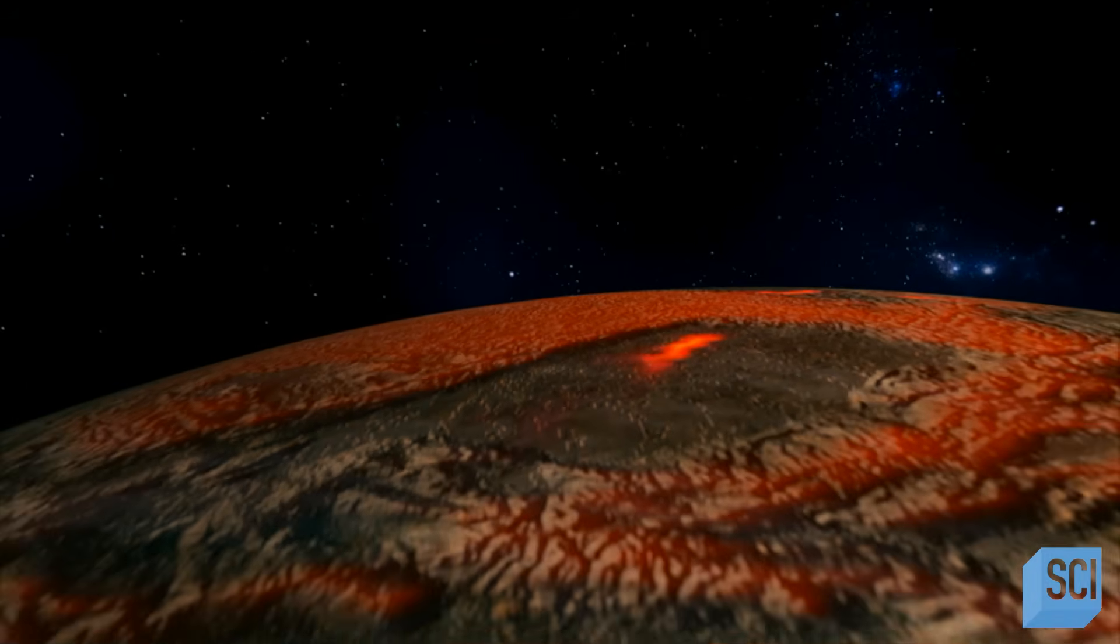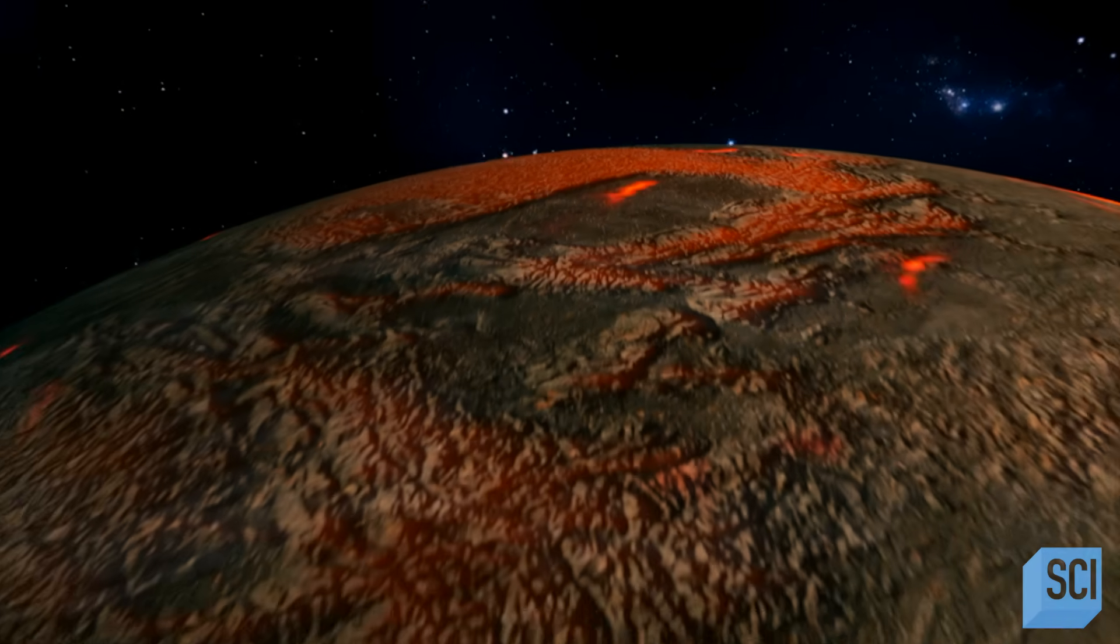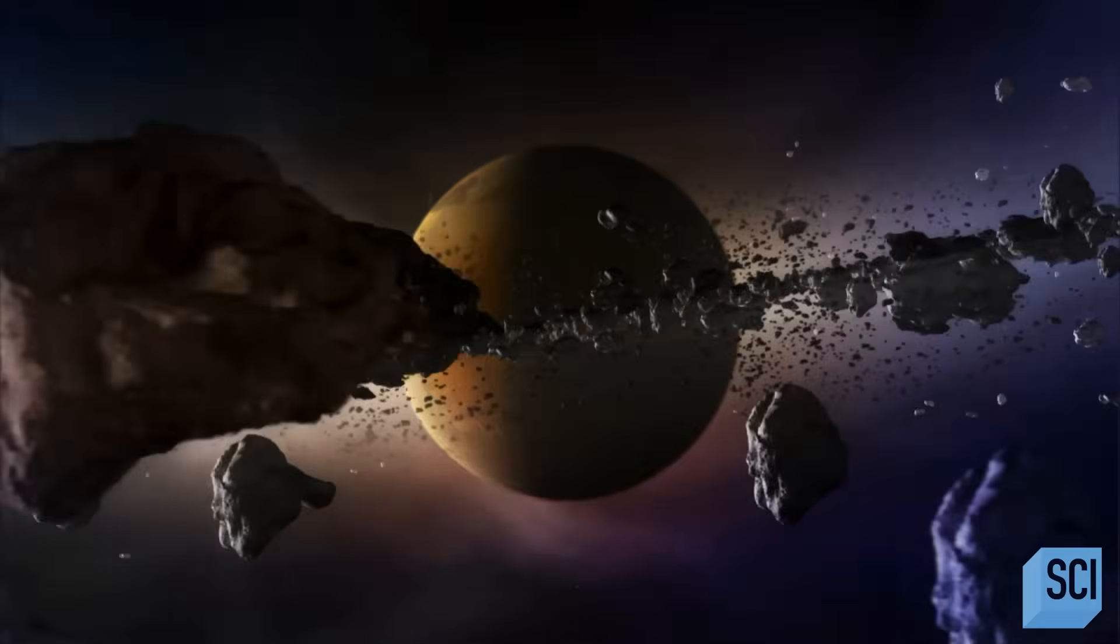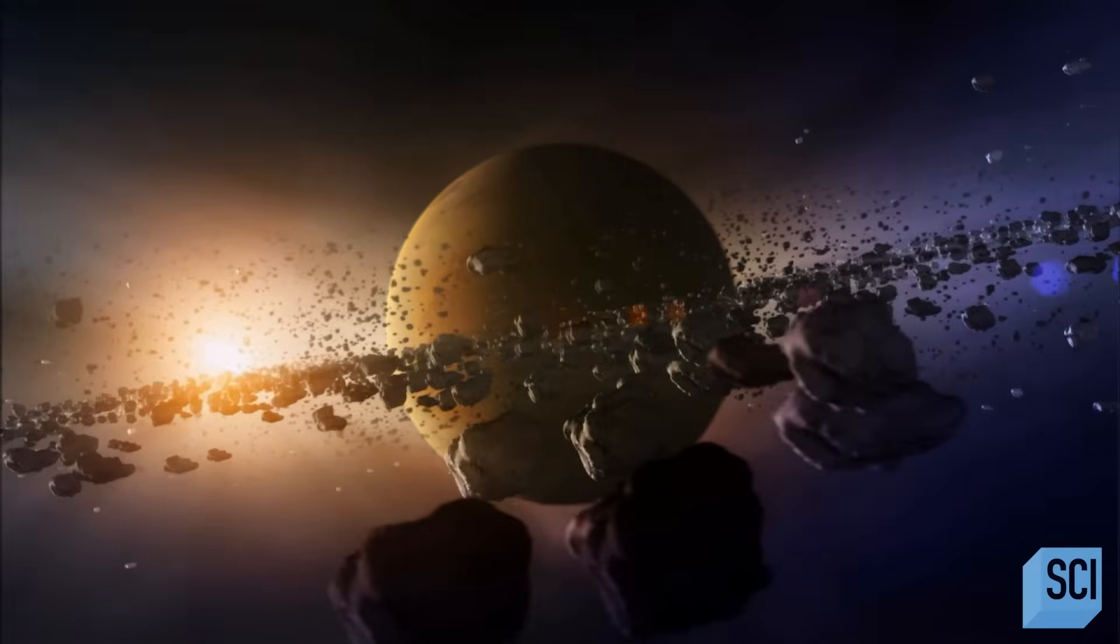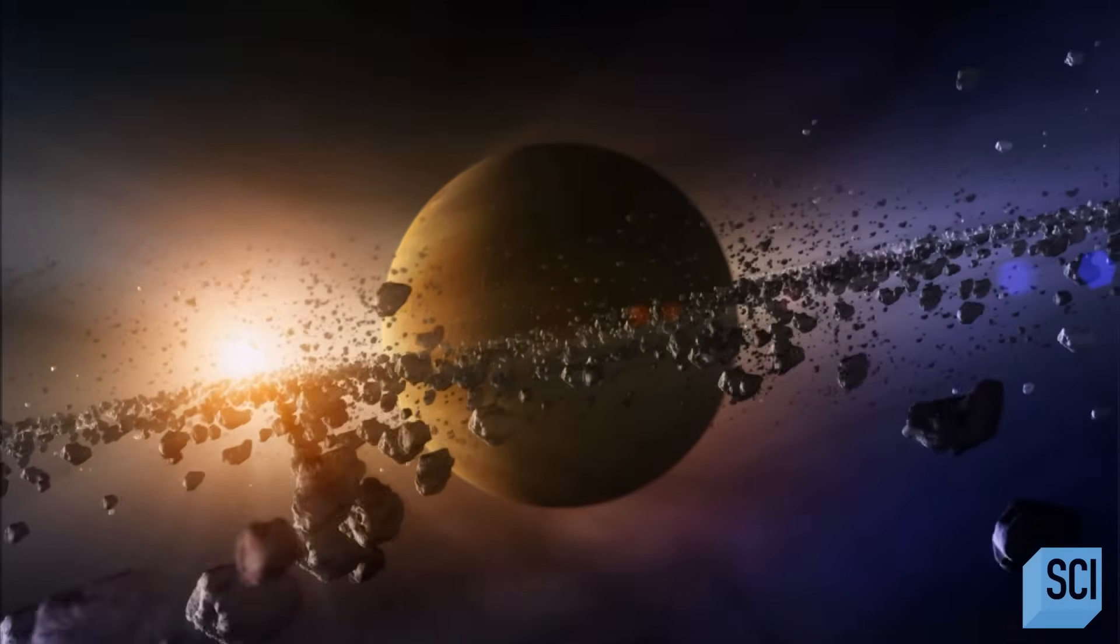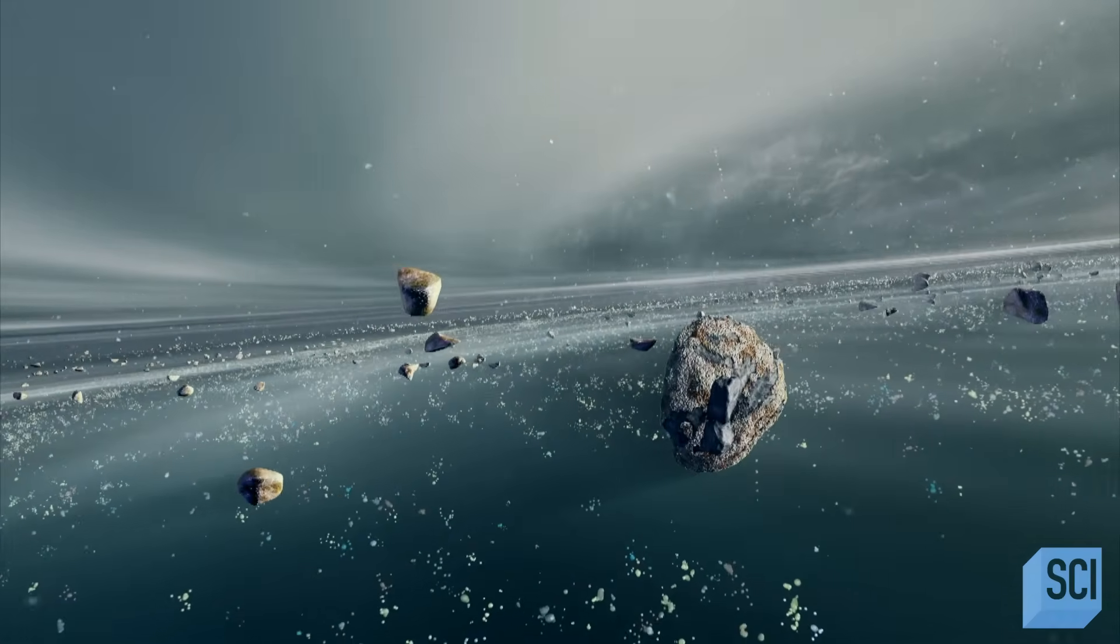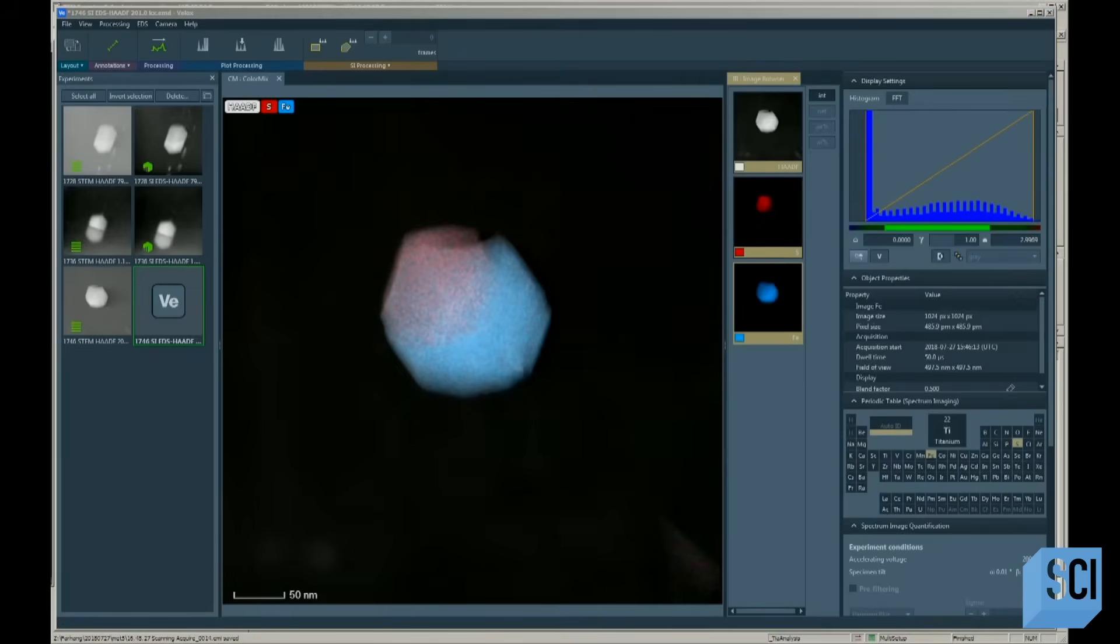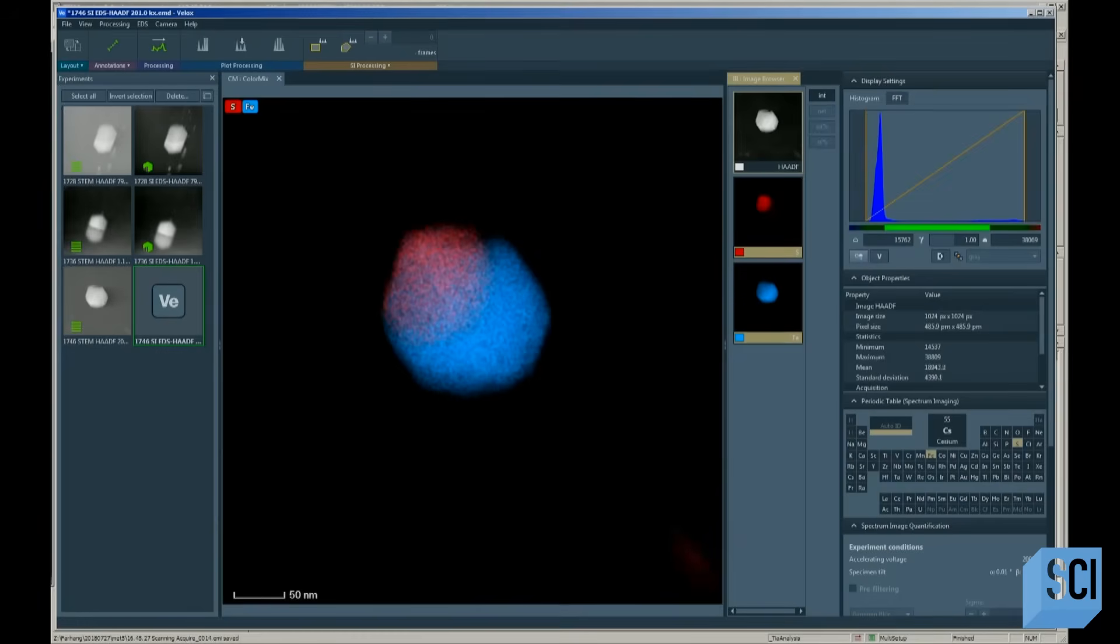But could their planet of origin have become part of the rubble pile created by Jupiter? These meteorites, they have characteristics that show that they probably formed somewhere quite close to Jupiter, but in the inner side of Jupiter, closer to the Sun.